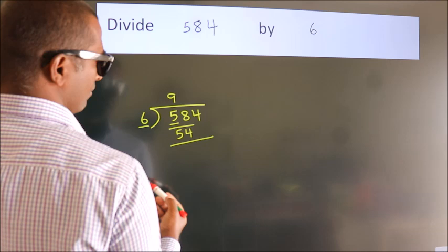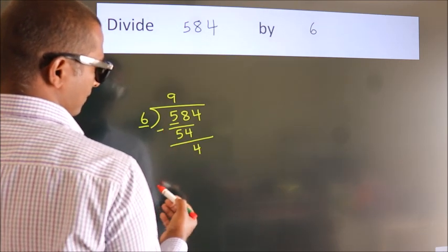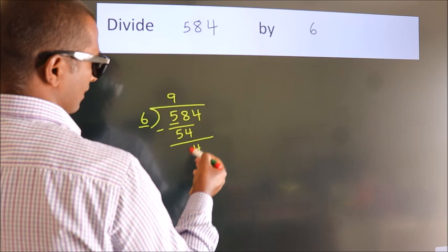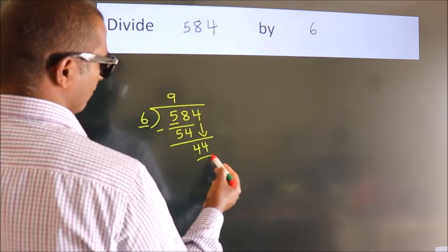Now we should subtract. We get 4. After this, bring down the beside number. So 4 down. So 44.